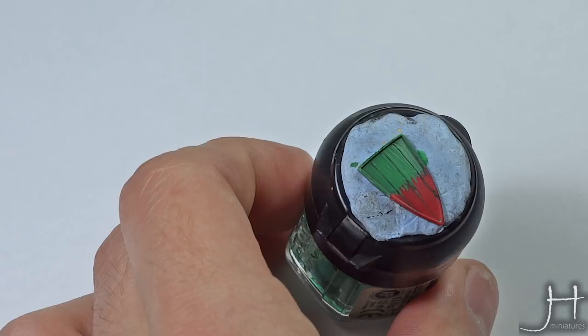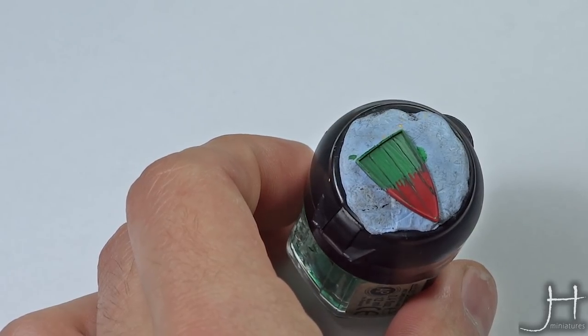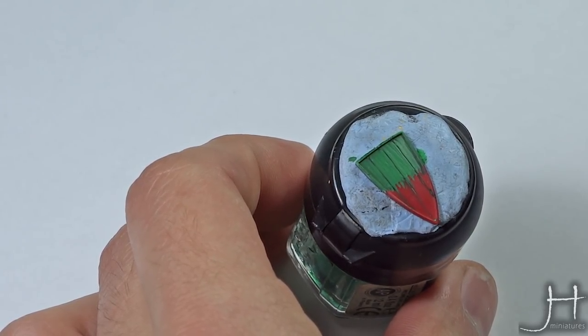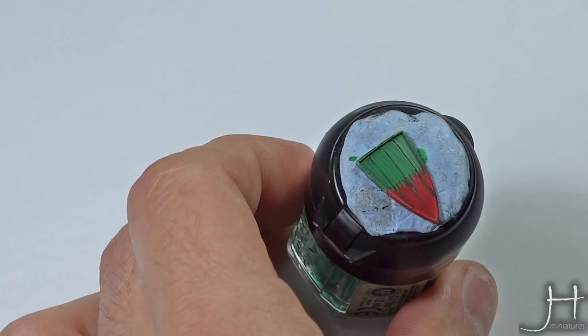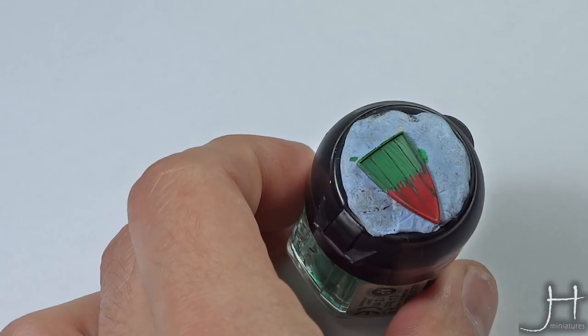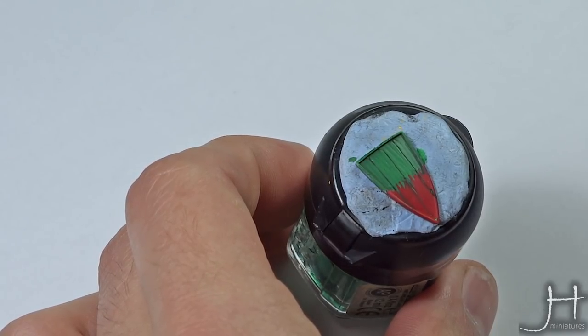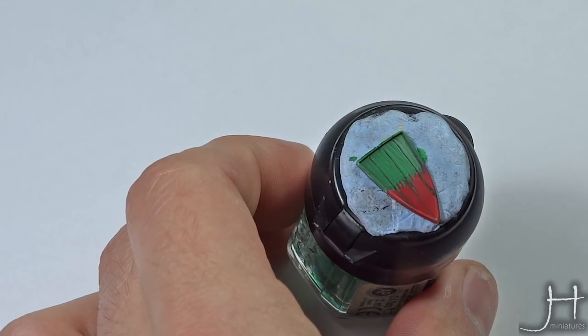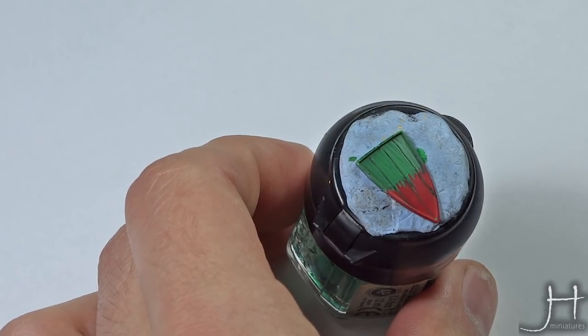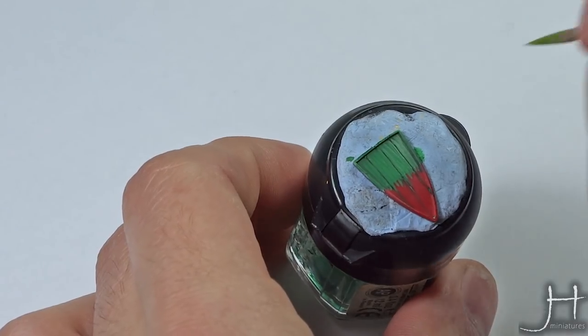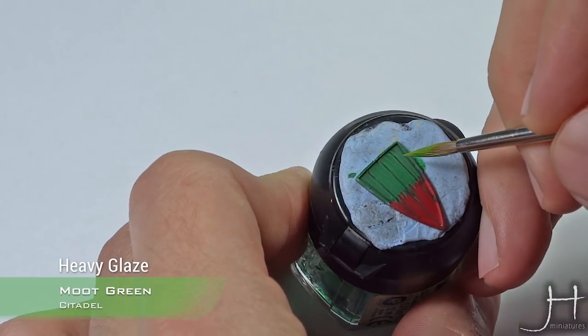By the way, I forgot to say there should have been a graphic on part of the screen, but that was Warpstone Glow, that is the base coat. Now we will apply Moot Green. I will thin this to what I call a heavy glaze. This paint should be thin enough that it flows nicely and doesn't cover too much.